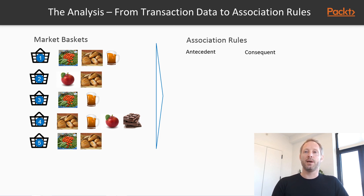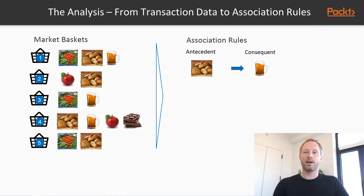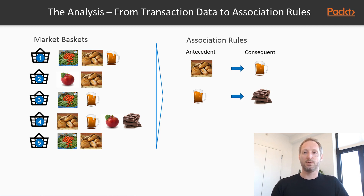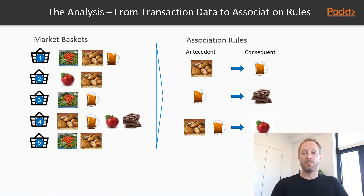Inside the association rules, item sets take the role of either antecedent or consequent. The purchase of the antecedent implies the purchase of the consequent. For example, association rules could be: the purchase of bread implies the purchase of beer, or the purchase of beer implies chocolate. You can also have more complex item sets on either side of the rule — for instance, bread and beer implies apple, or apple and beer implies chocolate and vegetables.